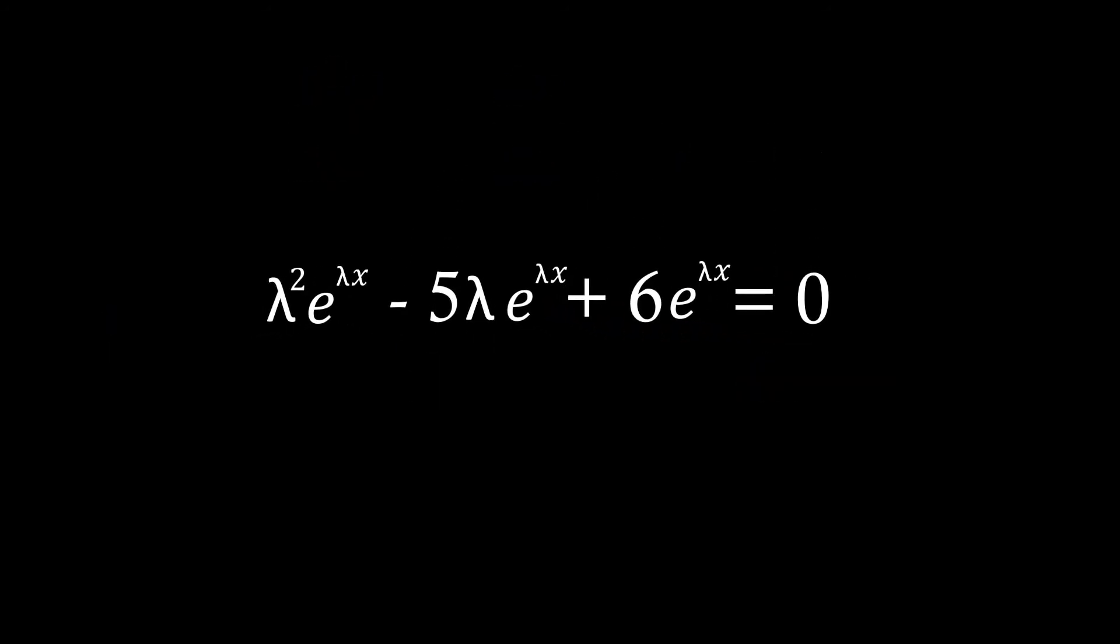Well, as you can see here, we've actually now got a quadratic in terms of lambda. And as well as this, we can actually divide both sides by e to the lambda x, as e to the lambda x can never be zero, so it won't be a solution.